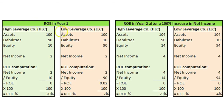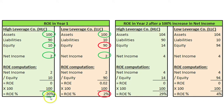High-Leverage Co. (HLC) and Low-Leverage Co. (LLC). In year one, both companies had $100 of assets and $2 of net income, but common shareholders only financed 10% of HLC's assets, whereas common shareholders financed 90% of LLC's assets. This difference in financing resulted in HLC achieving an ROE of 20%, whereas LLC only achieved an ROE of 2%. HLC's ROE of 20% indicates that HLC's management was able to generate $0.20 of net income for each of the $10 invested by common shareholders, whereas LLC's management was only able to generate $0.20 of net income for each of the $90 invested by its common shareholders.